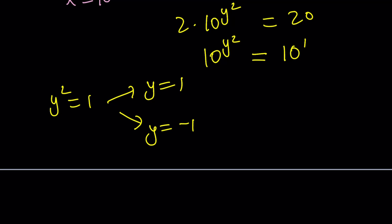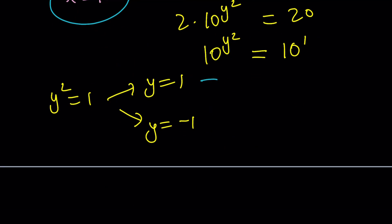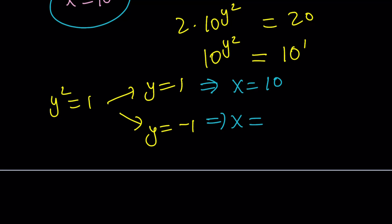Now, we've got these two solutions, but what is y? What is the relationship? Well, x is equal to 10 to the power y, so from here we can find the x values. x is going to be 10 to the power 1, or x equals 10 to the power negative 1, which can be written as 1 over 10.